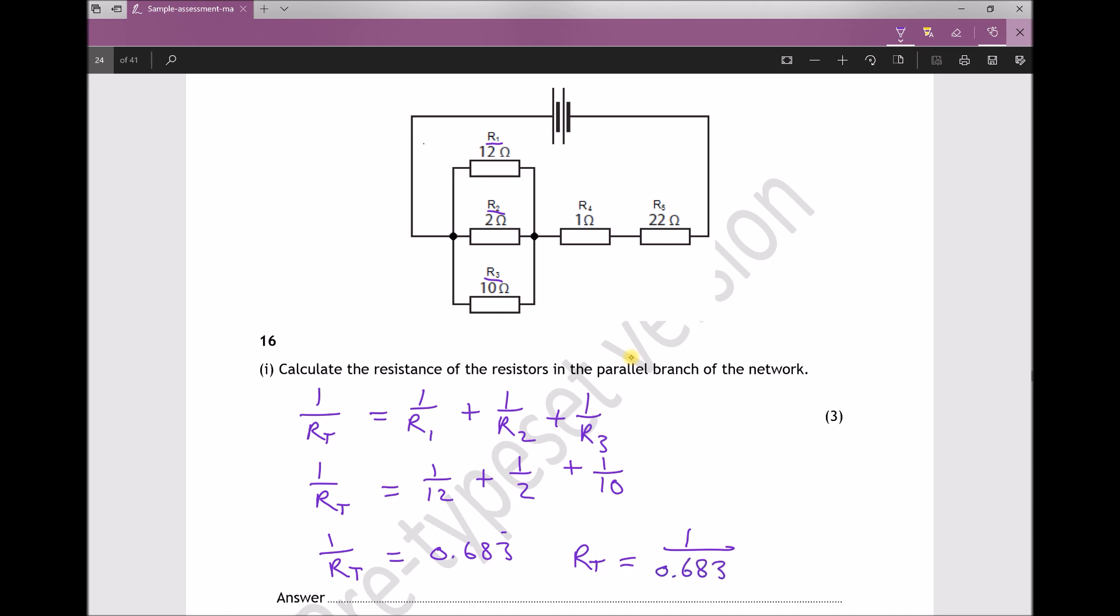So I'm going to write 0.683 recurring but I'm going to use my full calculator answer. So 1 divided by answer gives 1.463 ohms.